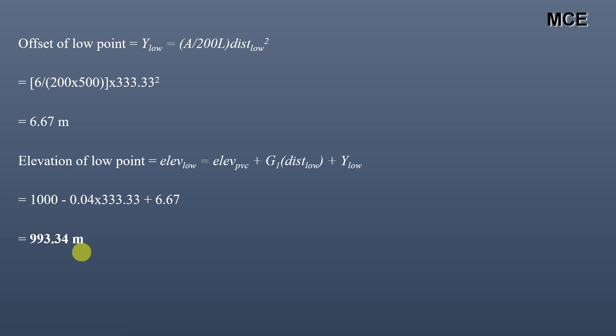This is how you can find the station and the elevation of PVI, PVT, and the lowest point of the sag vertical curve. I hope this solution video was clear and you learned something new. You can find more helpful civil engineering videos on my channel, so please subscribe and share this video. Thanks for watching and stay tuned.